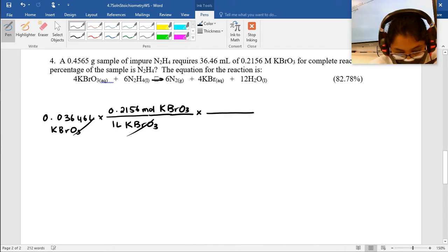And I can now use the mole to mole ratio of six N2H4 to four of this to go to moles of N2H4. Actually, I want to go to moles of N2. So I'm going to use this and that. Wrong component. So six moles of N2.